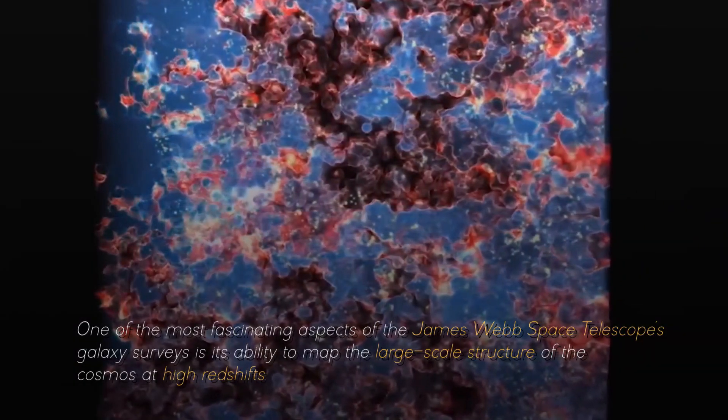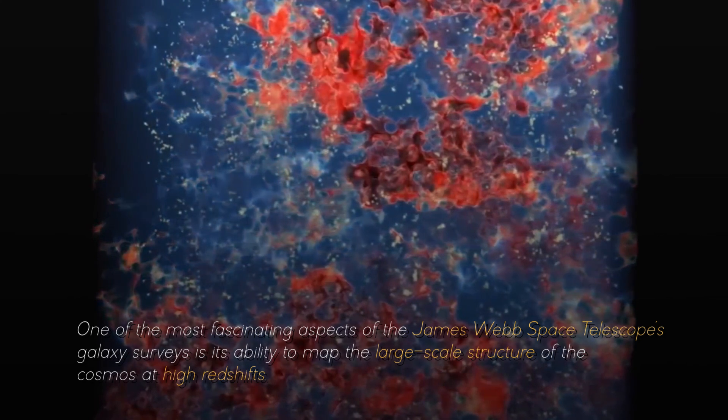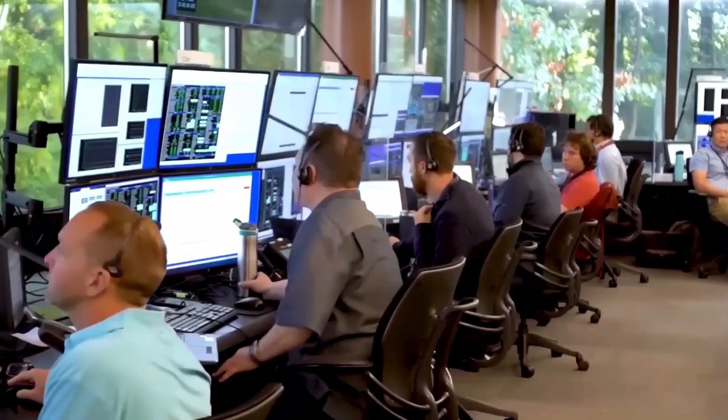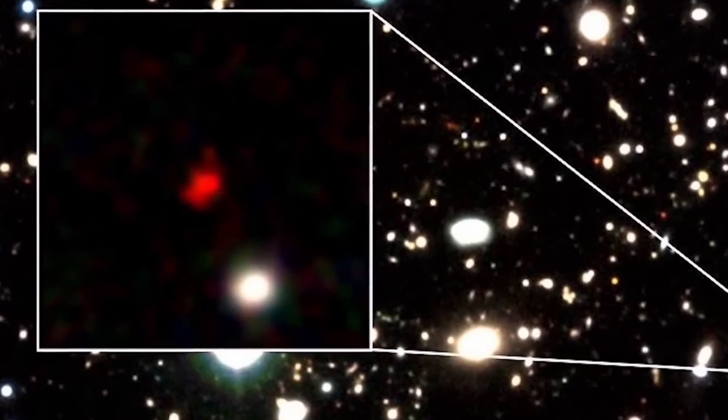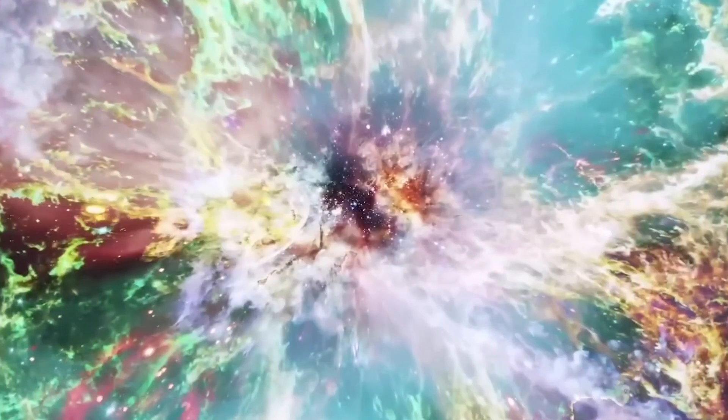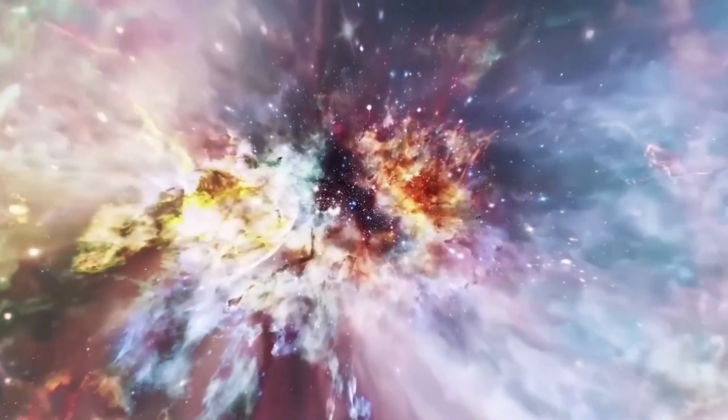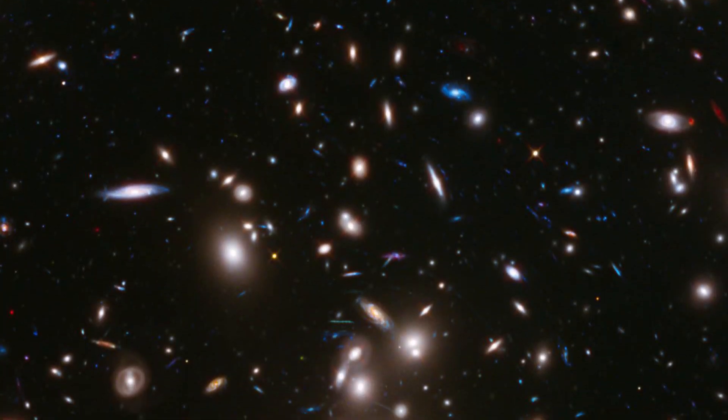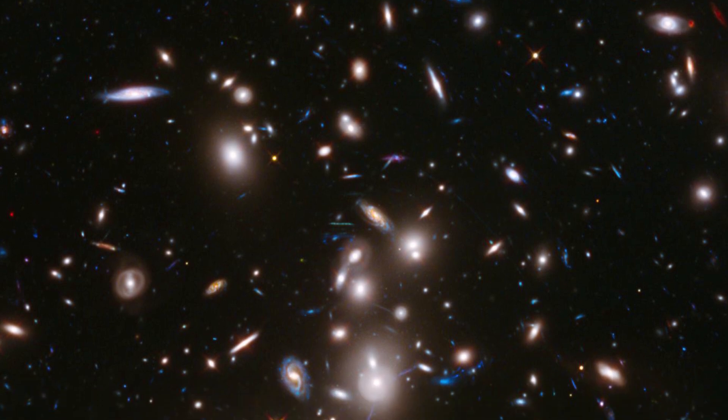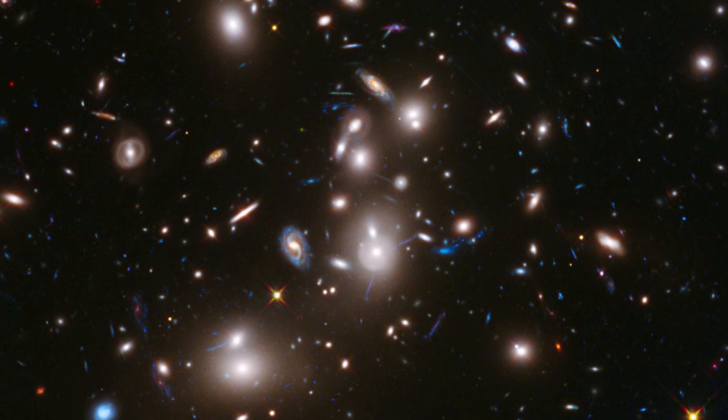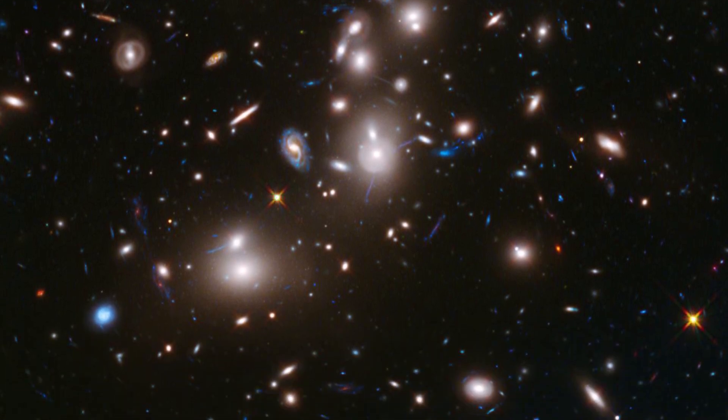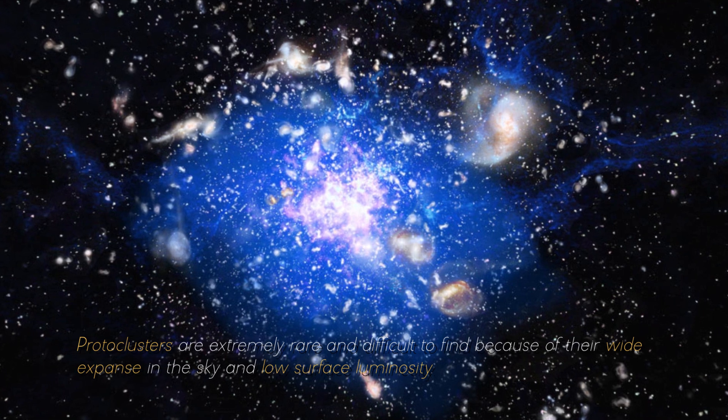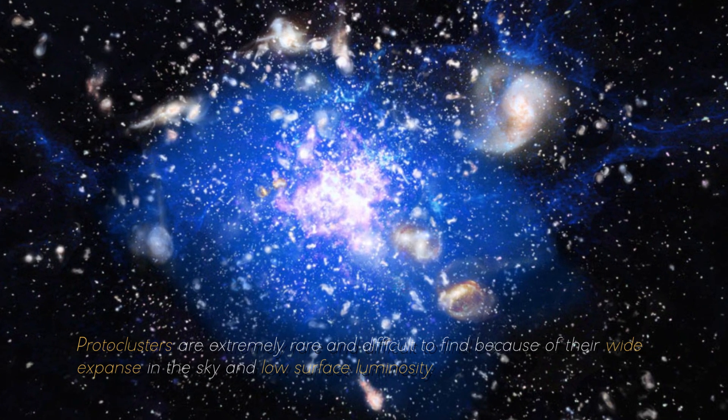One of the most fascinating aspects of the James Webb Space Telescope's galaxy surveys is its ability to map the large-scale structure of the cosmos at high redshifts, when galaxies were still young and grouped into large clusters known as protoclusters. These protoclusters are the predecessors of today's galaxy clusters, which are the largest gravitational structures in the universe. By studying these protoclusters, we can learn about the interactions between galaxies, their interactions with their surroundings, their growth and merger, and how they influence the formation of stars and planets.